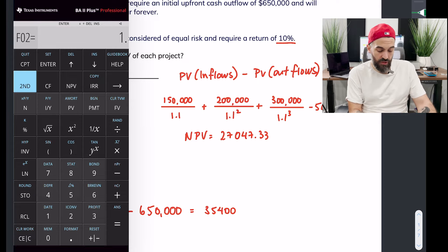Then $150,000, scroll down, $150,000 enter, frequency is one, $200,000 enter, frequency is one, $300,000 enter. If you had more cash flows you just enter all of them in order. Then you just press net present value, enter your discount rate of 10, save that, down, compute and you would end up with the same result.